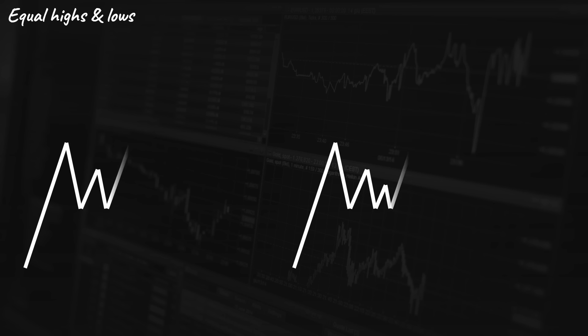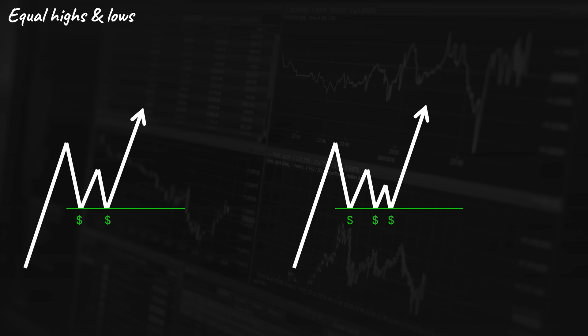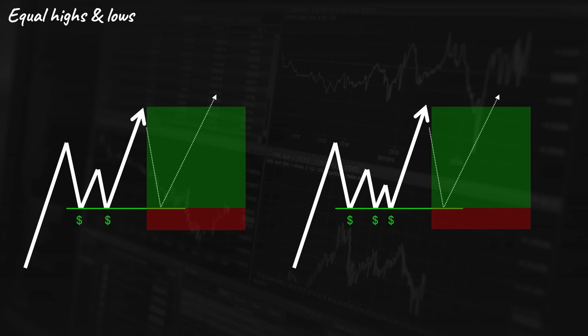We have many types of liquidity in the market. The first type is equal highs and lows. As the name suggests, the price will form equal lows, where the low points are about the same level. Similarly, the price will form equal highs, where the highs are about the same level. The double or triple bottoms created on the chart are great places for many retail traders to look for trading opportunities. They expect a rejection to the upside once the price taps into this area again, so they enter long positions at these levels and place their stop losses somewhere below this area.